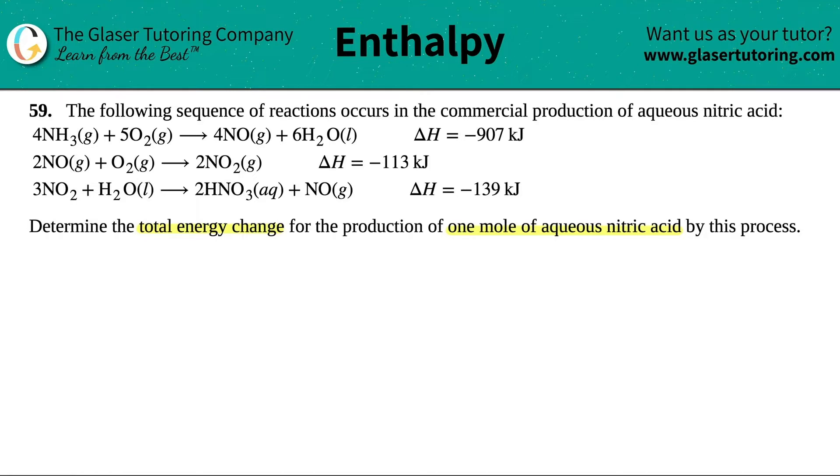The first thing is that we're looking for how much energy is going to occur when one mole of the aqueous nitric acid is produced. Now nitric acid is the HNO3. HNO3 is always nitric acid, and that's produced in the third step. Think of this as step number one, step number two, and then step number three. We have to go in progression until we finally get our nitric acid out.